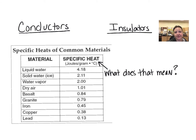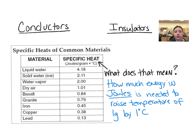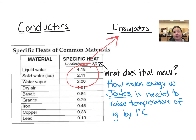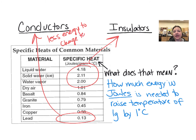You should be able to look at the specific heat of a material and determine if it would be a good conductor or a good insulator. Specific heat is how much energy is necessary for one gram of the material to raise in temperature by one degree Celsius. If a material has a very high specific heat, it requires a lot of energy to change temperature and will cool off slowly. If a material has a very low specific heat like lead, it requires less energy to change temperature, heats up quickly, and also cools down very quickly.